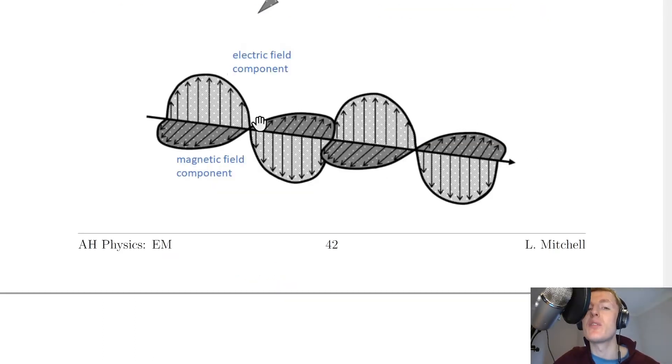Adding in the picture of the wave, this is what you would see. Here we have the electric field component going up and down, and the magnetic field component coming towards us and away from us. The direction of travel of the wave or energy propagation moves perpendicular to both of these.